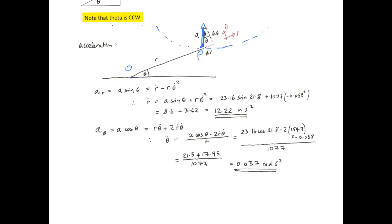And again, this time we make theta double dot the subject of the formula, and we substitute everything in. A cos theta 23.16 cos 21.8 minus 2 times the values of R dot and theta dot that we computed previously, divided by the total radius of P from O.